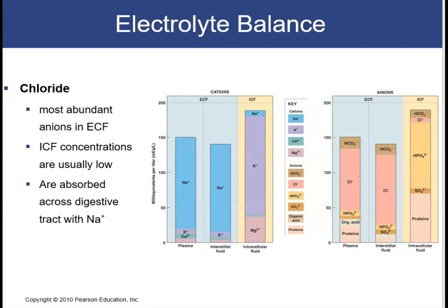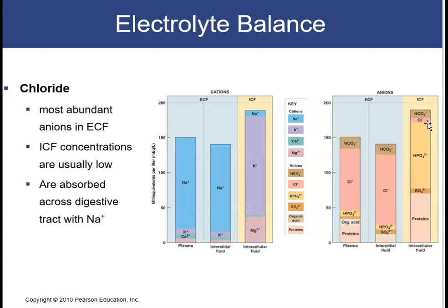Our last electrolyte is chloride — the most abundant anion in the ECF, with very low amounts in the ICF. Most chloride comes from absorption across the GI tract in combination with sodium — hence sodium chloride. When we absorb sodium, we also absorb the chloride ion. Before moving on, it's important to distinguish anion versus cation: an anion carries a negative charge — the chloride ion and phosphate ion are anions. A cation carries a positive charge — all the other electrolytes discussed, such as sodium, potassium, calcium, and magnesium, are cations.